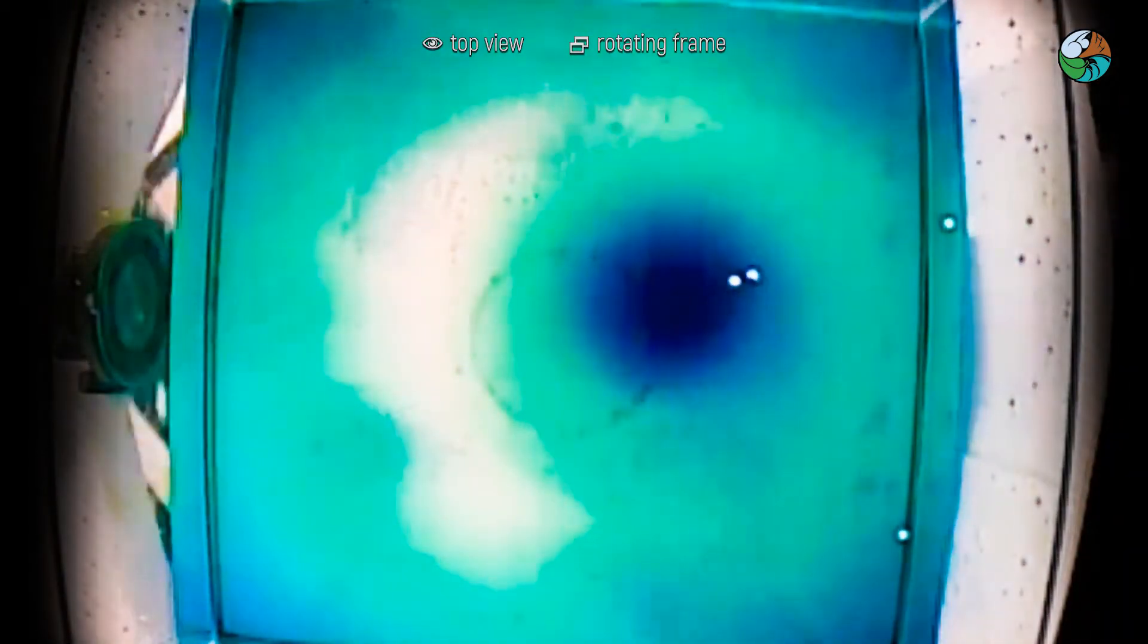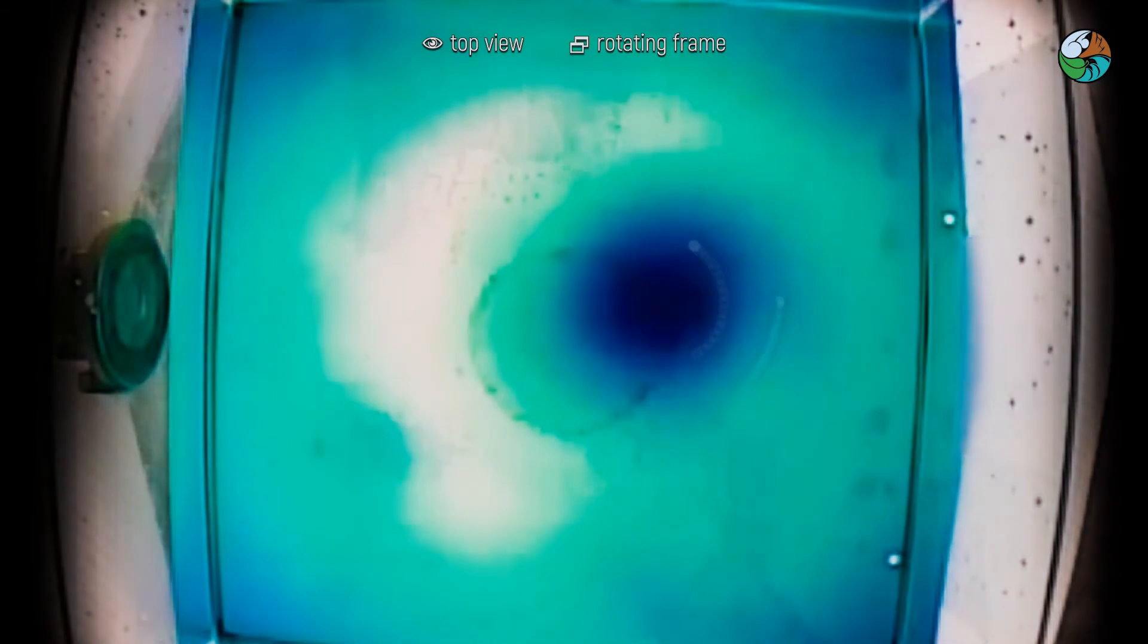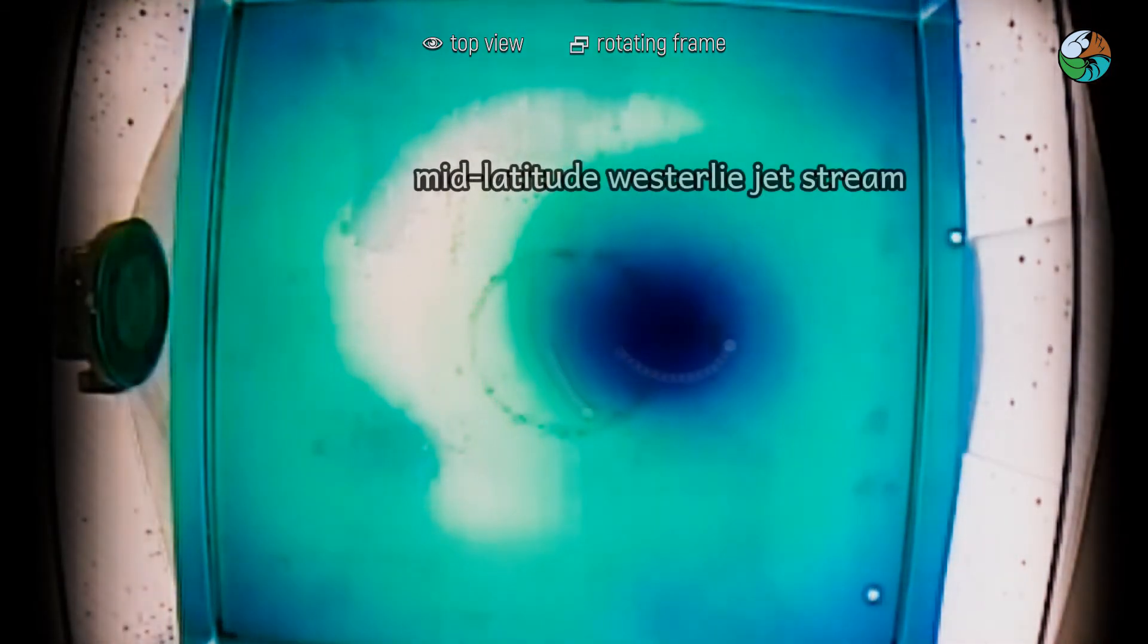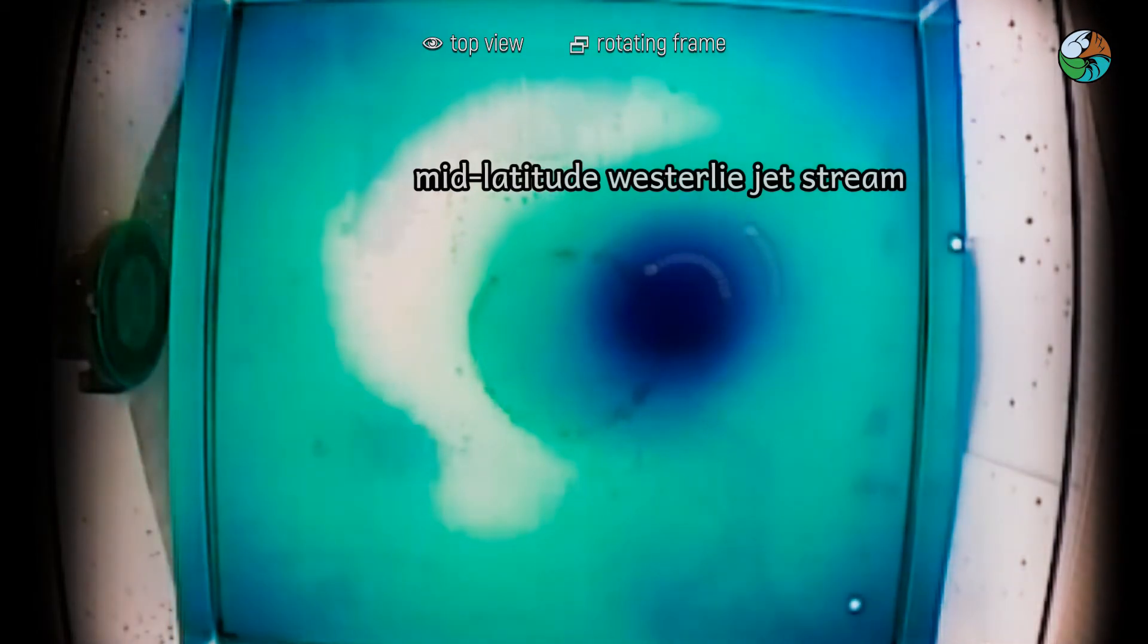By observing the surface flow from above, we can see a swirl around the cold polar air. In reality, that is the mid-latitude westerly jet stream.